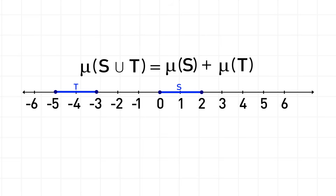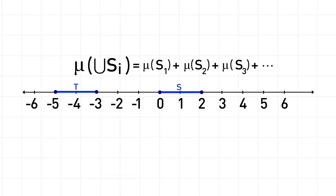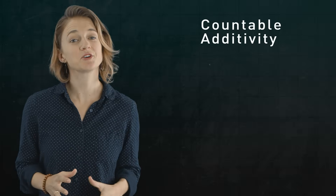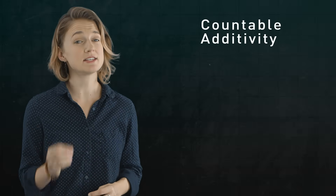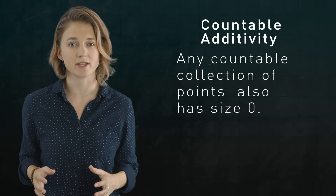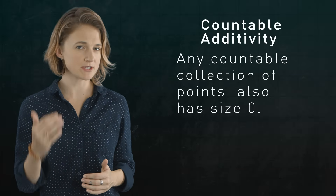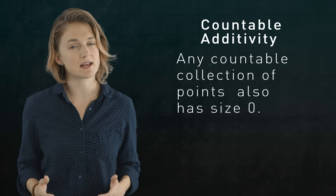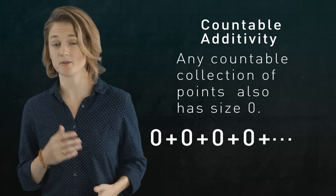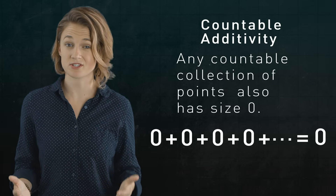In fact, if we take the union, or combine together, countably many disjoint sets, their sizes still add. That's called countable additivity. Since a single point has size 0, countable additivity tells us that any countable collection of points, like all the integers, also has size 0. After all, 0 plus 0 plus 0 plus 0 plus 0 plus 0 is just 0.